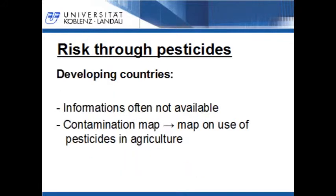To generate these risk maps, it is important to have spatial data for the parameters mentioned before. However, these data are often not available for developing countries. In developing countries, the most cases of pesticide-induced negative effects on human health can be found. A first step to determine the pesticide-induced risk may be the generation of contamination maps. I will show you a method of how such contamination maps can be developed with open source software, using only pesticide use in the agricultural sector.